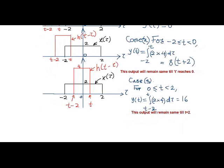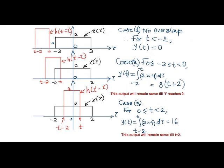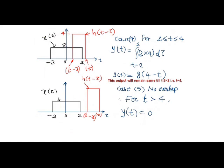After this, in the next case, as h of t minus tau is now coming out of the area of x of tau, the output y of t, the convolution integral output, will be computed for the region for the values from t minus 2 up to 2.